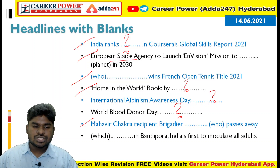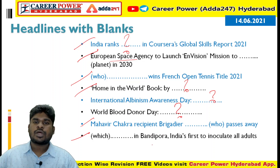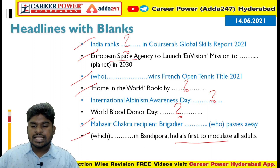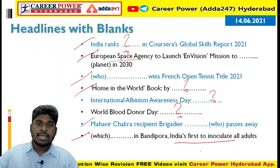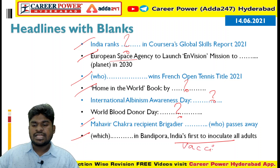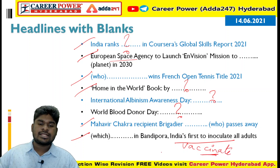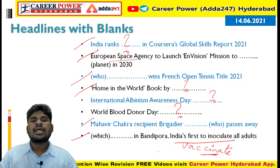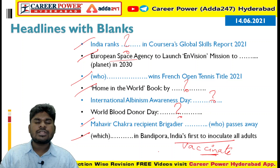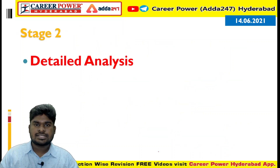The last headline is about a village in Bandipura, Jammu & Kashmir — it is the first village in India to inoculate all its adults. Inoculate means vaccinate; this is the first village in India to vaccinate all its adults above 18 years of age. These are the headlines for today and now we'll go into the detailed analysis.